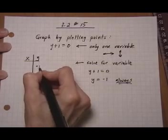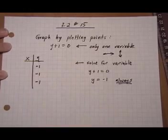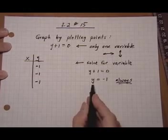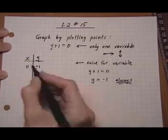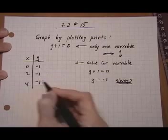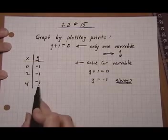So no matter what three points I choose for x, it doesn't affect y. I could pick 0, 2, and 4 let's say. It doesn't matter. I'm always going to have y is minus 1.